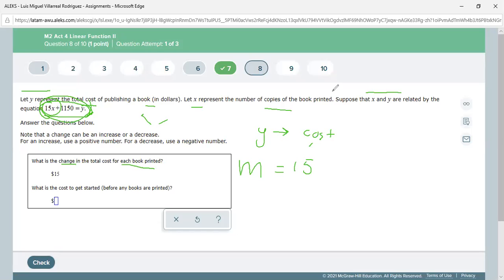Next, it says, what is the cost to get started before you print anything? You don't have to do any operations. This means before you print anything - when x is equal to zero. So in the formula for the equation, it's the b.